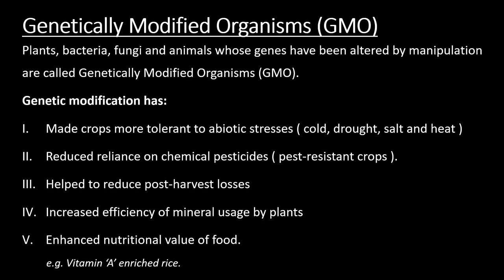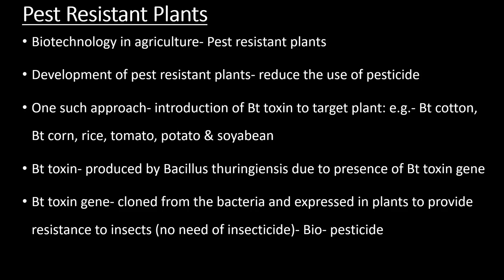Pest resistant plants — biotechnology in agriculture. Development of pest resistant plants helps reduce the use of pesticides. One such approach is the introduction of biotechnology into target plants: BT cotton, BT corn, rice, tomato, potato, and soybean. BT toxin is produced by Bacillus thuringiensis. The BT toxin gene is isolated from this bacteria, cloned, and expressed in plants to provide resistance to insects, so there is no need for insecticide.